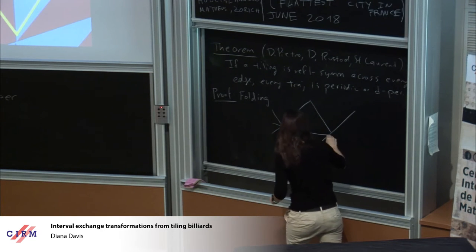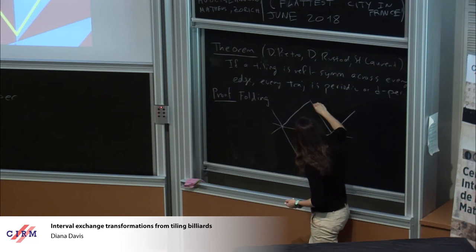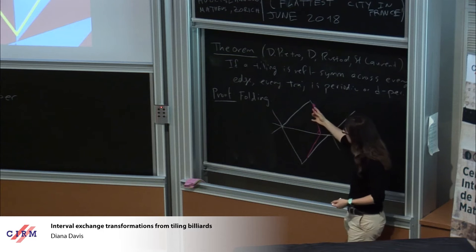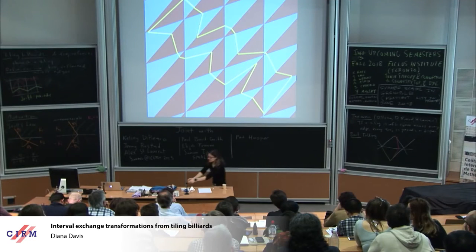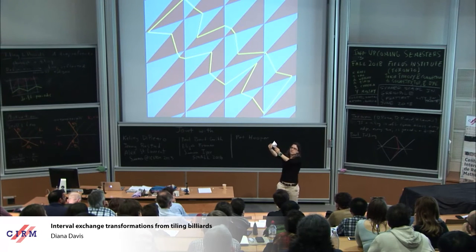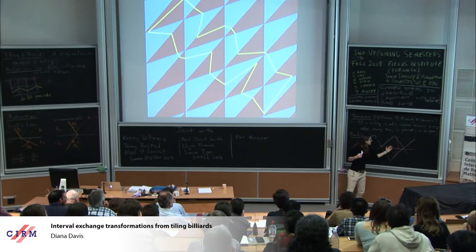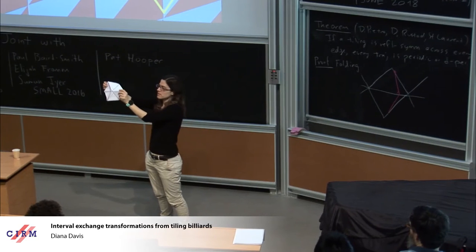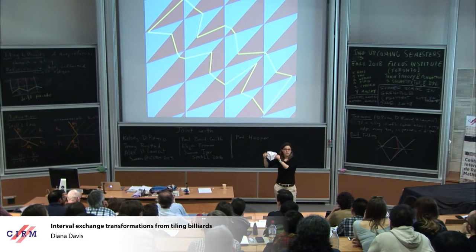The idea is that if we have a tiling that's reflection symmetric across every edge — for example, the equilateral triangle tiling — and we have some trajectory starting here and going to somewhere else, the angle of incidence equals the angle of reflection as it keeps going. Because the tiling is reflection symmetric across every edge, it does the same thing in this polygon as it did in the previous one. So the pieces of trajectory lie exactly on top of each other when you fold. Since the tiling is reflection symmetric across every edge, we can just reflect across, across, across, and the thing closes up.